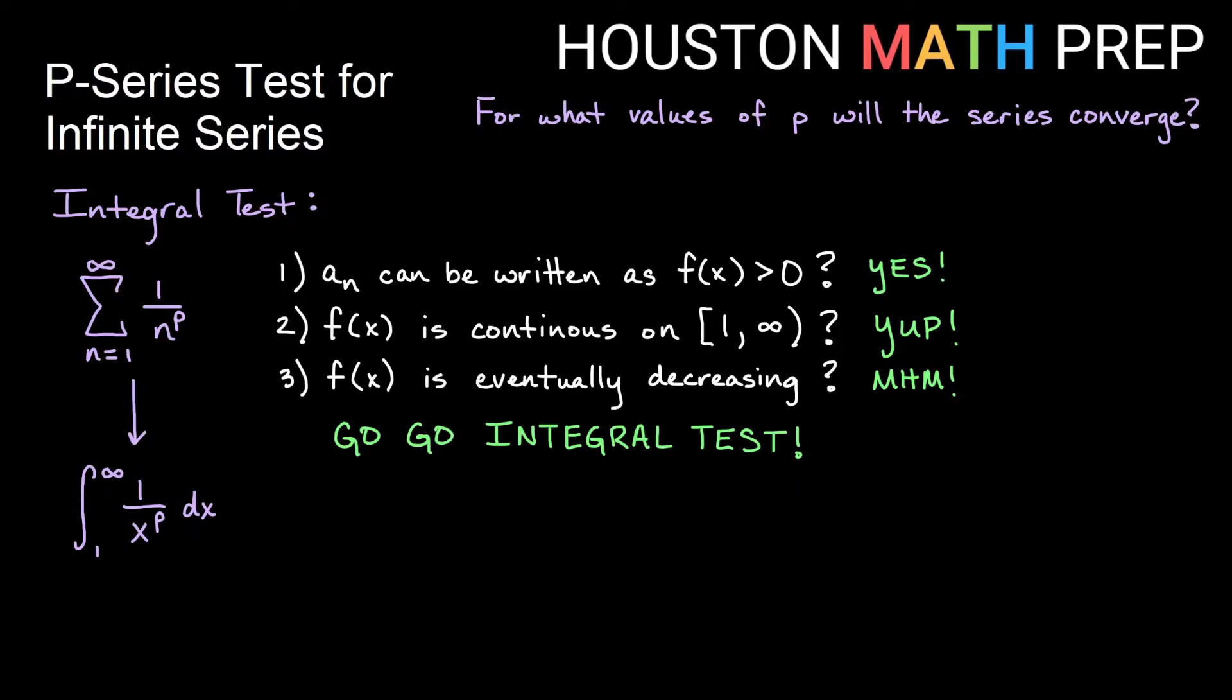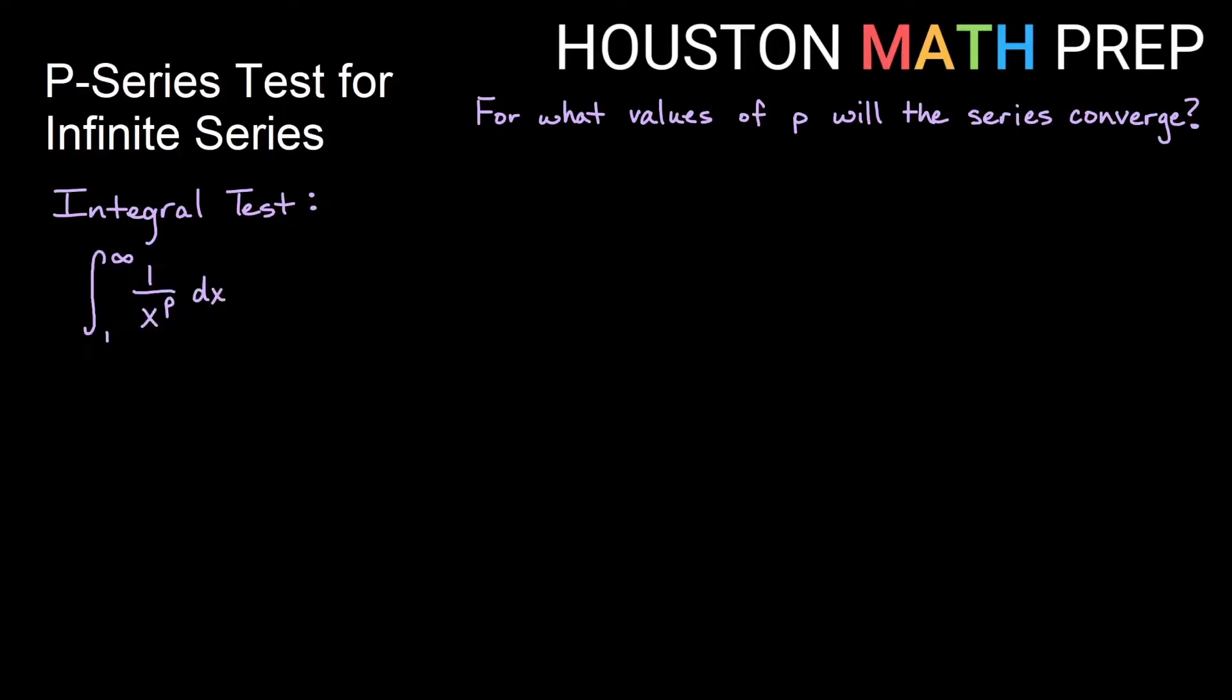We'll change this to the integral from 1 to infinity of 1 over x to the p dx. We want to make one note that these will all be the same type of rule for integration as long as the power is not 1. So we're going to assume that p is not 1, but it can be anything else. We already know what happens when p equals 1 - it's the harmonic series. So we'll assume p is not 1, and then everything becomes a power rule for integration.